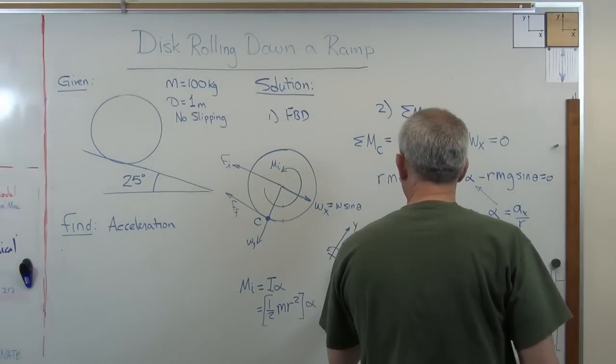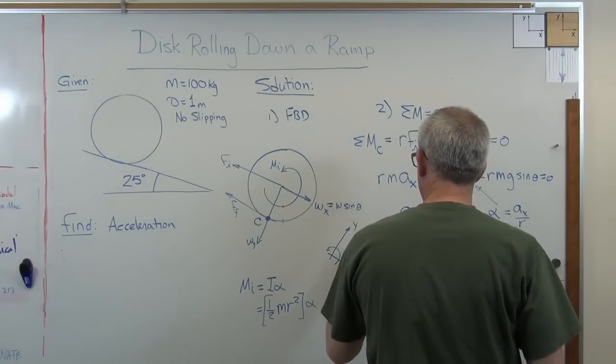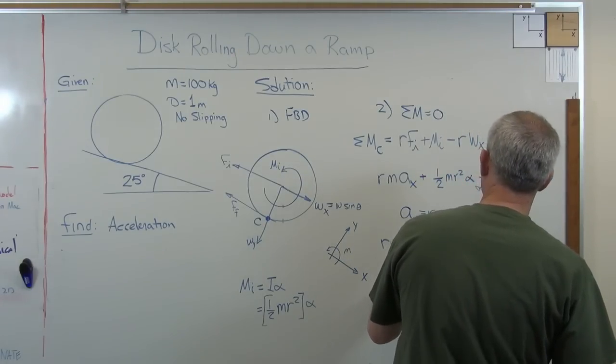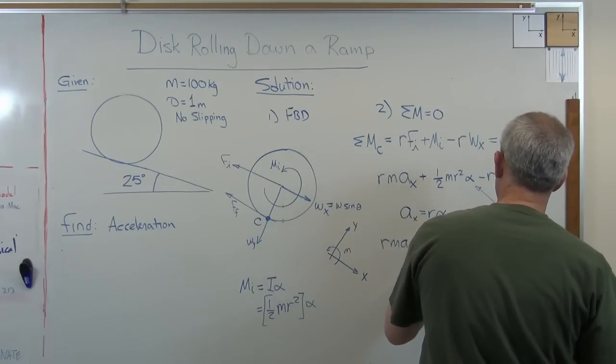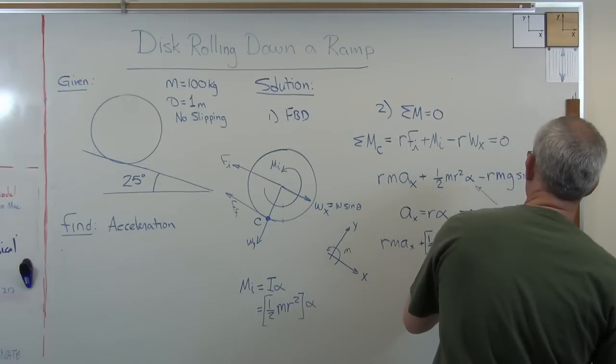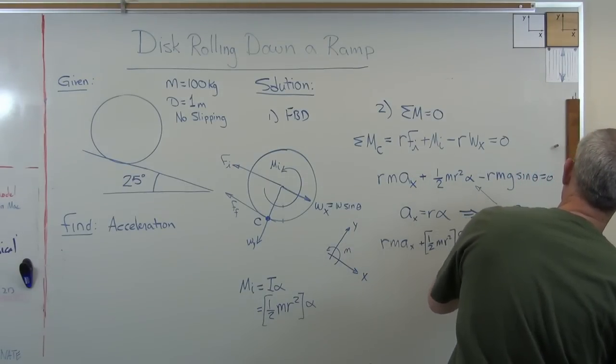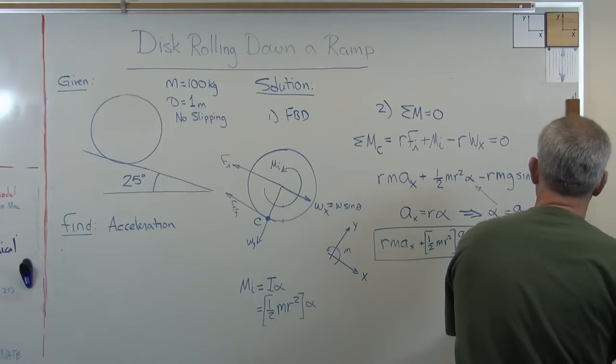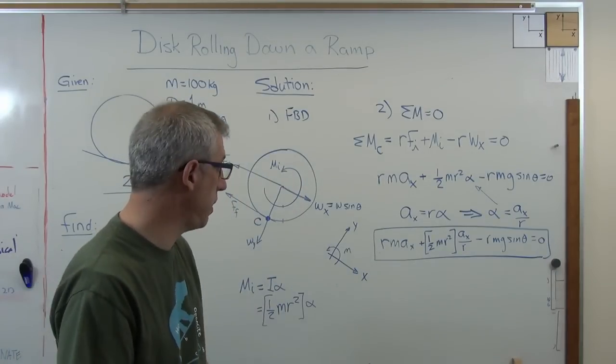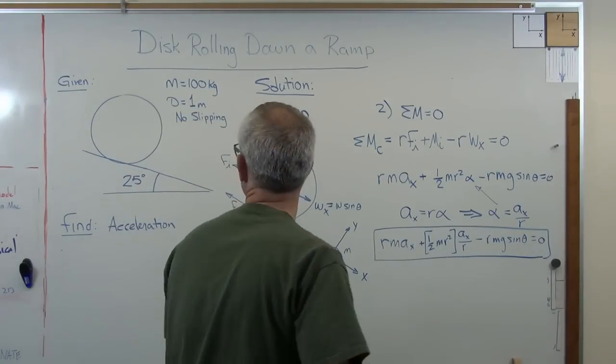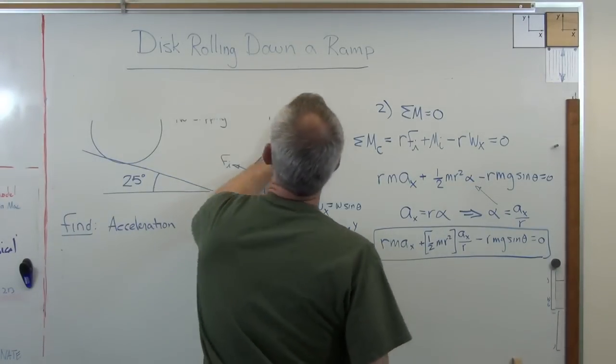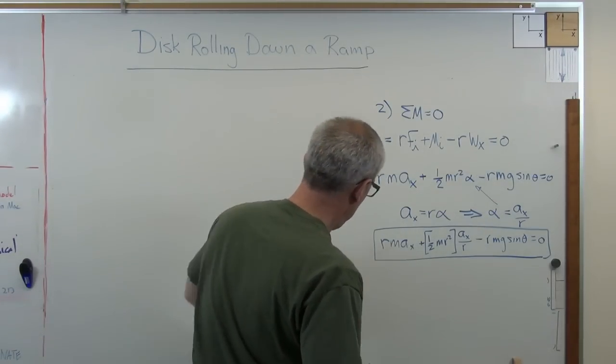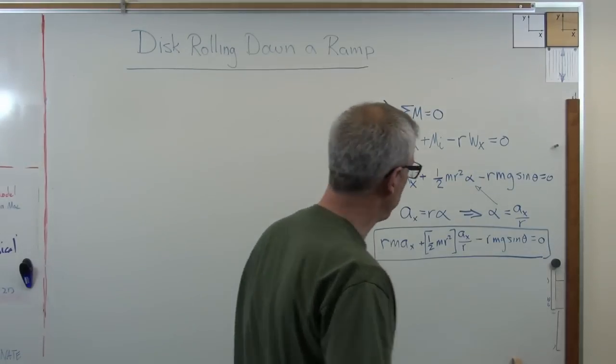Watch this. So I have R M A X plus one half M R squared times A sub X over R minus R M G sine theta equals zero. Now I'm in business. What's inside that box there? Solve that for A sub X. And you're going to get the acceleration. So let's expand that out a little bit or simplify it perhaps.